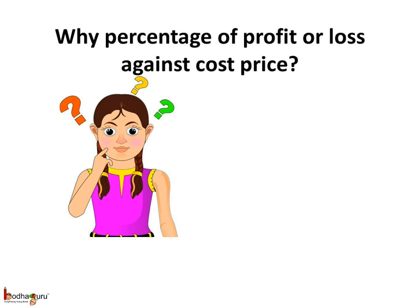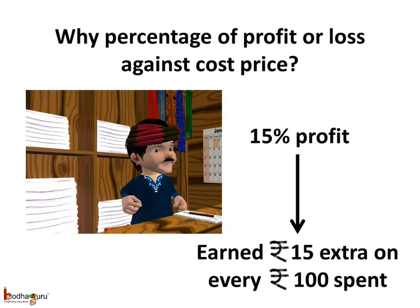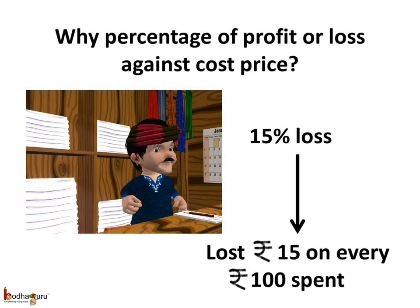You might wonder why we divide profit or loss by cost price only, and not selling price. When we say Manilal made 15 rupees as profit, it means he made 15 rupees extra on every 100 rupees he spent, which is the cost price. 15 percent profit means he spent 100 rupees and makes 15 rupees extra — that is, he gets rupees 115 total. And if Manilal made 15 percent loss, it means on every 100 rupees he spent, he lost 15 rupees, getting back only rupees 85.